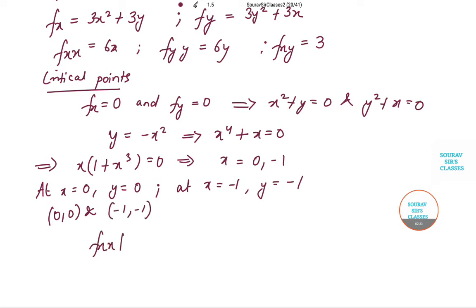So fxx*fyy minus fxy whole square will be equal to 36xy minus 9. This is equal to 9(4xy minus 1).